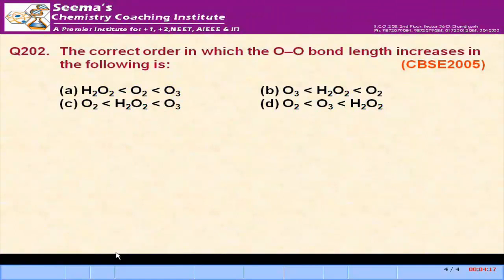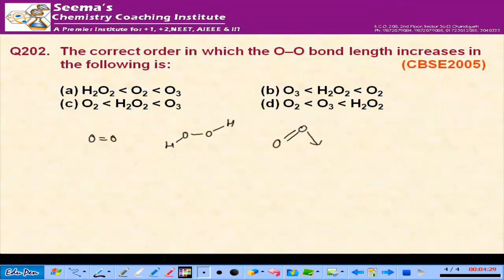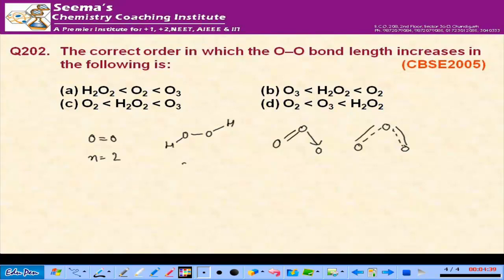The correct order of oxygen-oxygen bond length: O₂ has a double bond (bond order = 2), H₂O₂ has an open book-like structure with a single bond (bond order = 1), and ozone due to resonance has partial double bond character (bond order = 1.5). So double bond is shortest, single bond is longest, and 1.5 is in between.